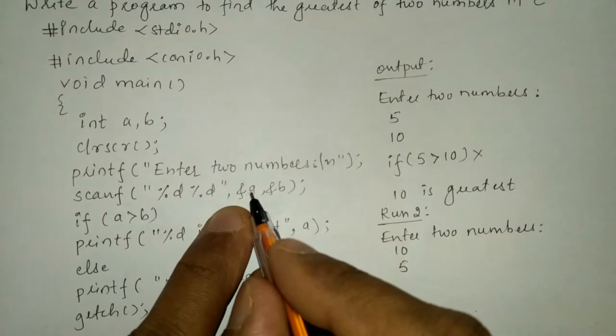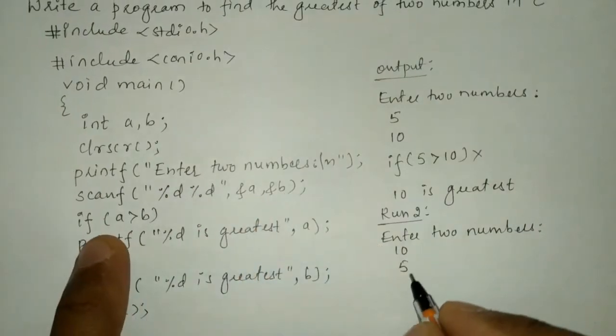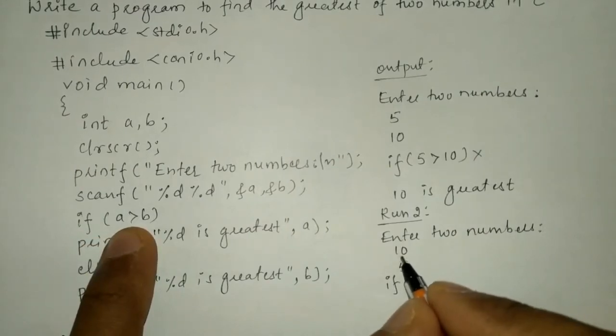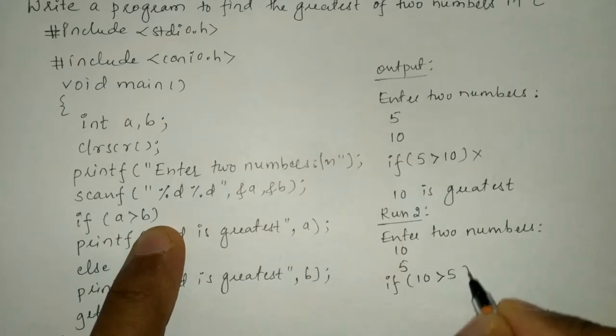So 10 is equated in variable a and 5 is equated in variable b. So now once again we are going to check the condition if a is greater than b. So a is 10 greater than b which is 5. So is this true, 10 is greater than 5? Yes, it is true.